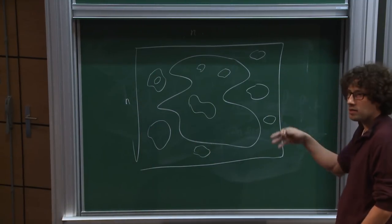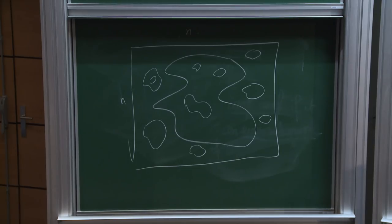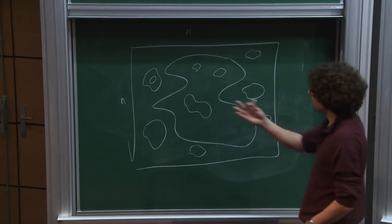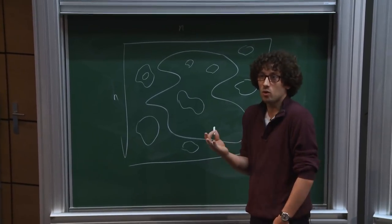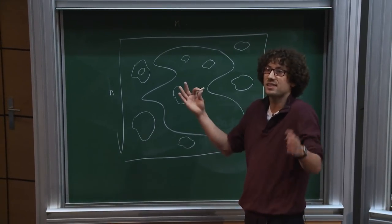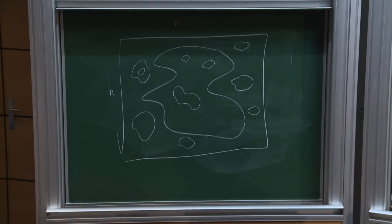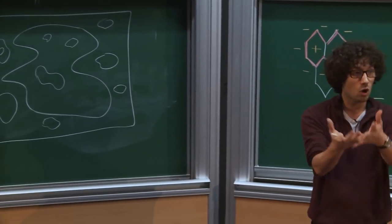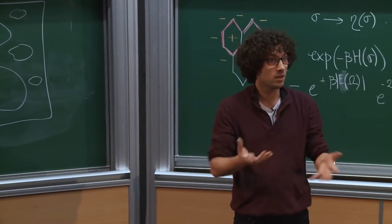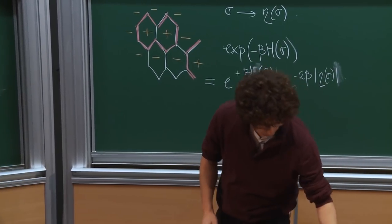So a natural question: if in a box of size n you typically see macroscopic loops, what happens when I rescale my lattice so that my box exactly fits in a box of size 1, and take a look at the random family of loops as a limit when n tends to infinity? Just rescale — imagine the hexagons have size 1 over n, or equivalently size delta, and let delta tend to 0.